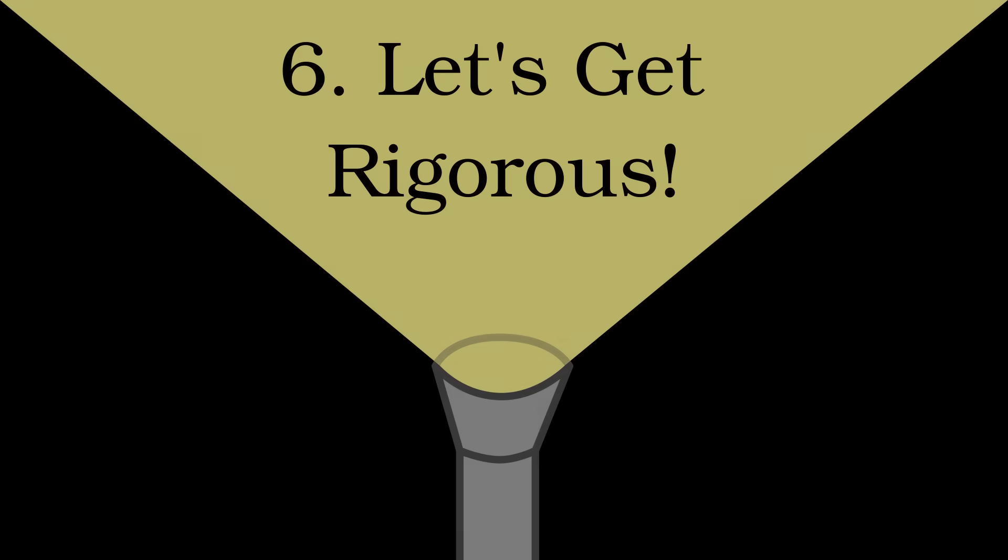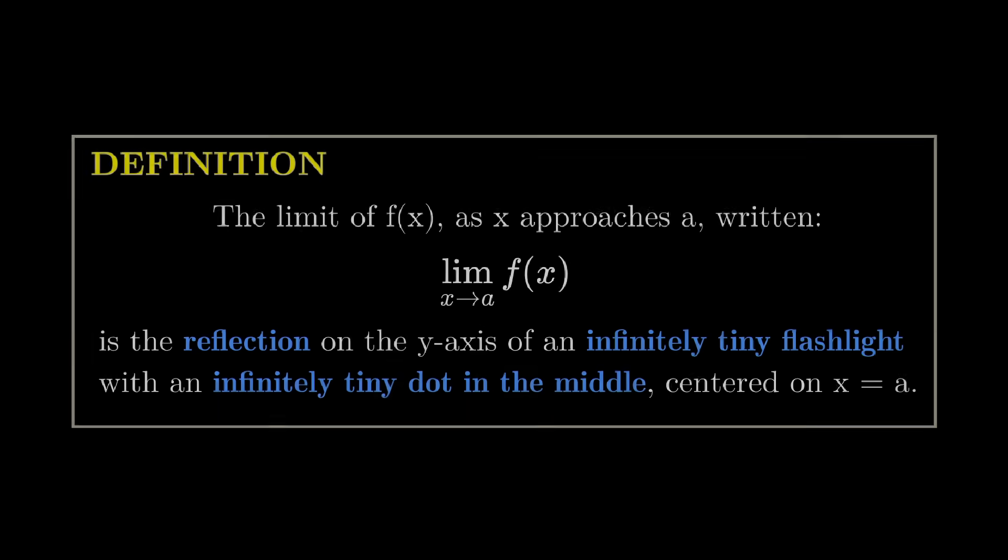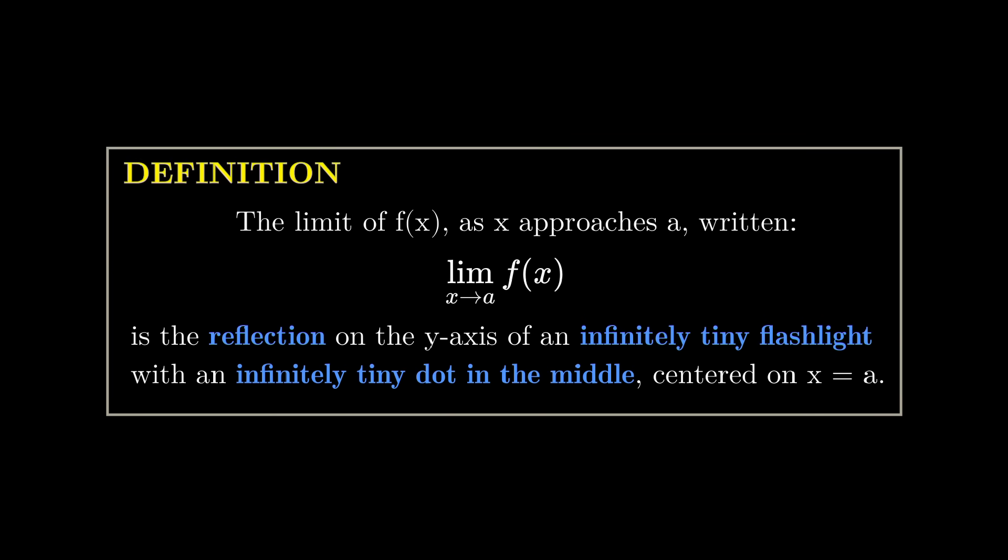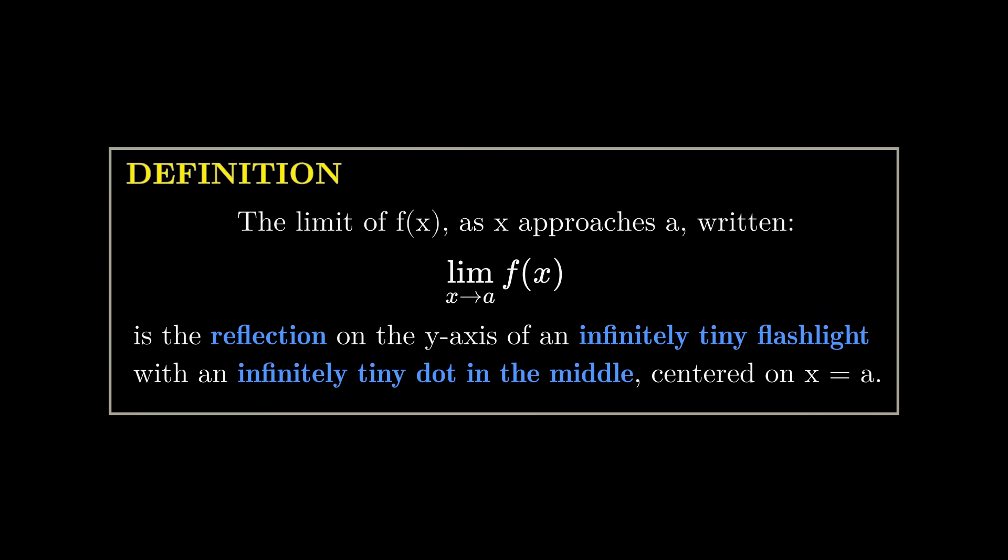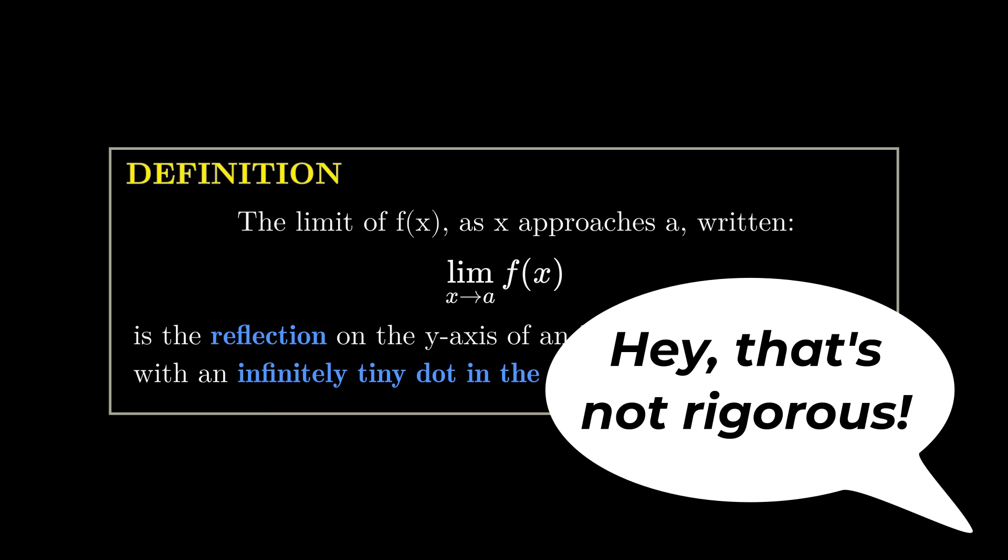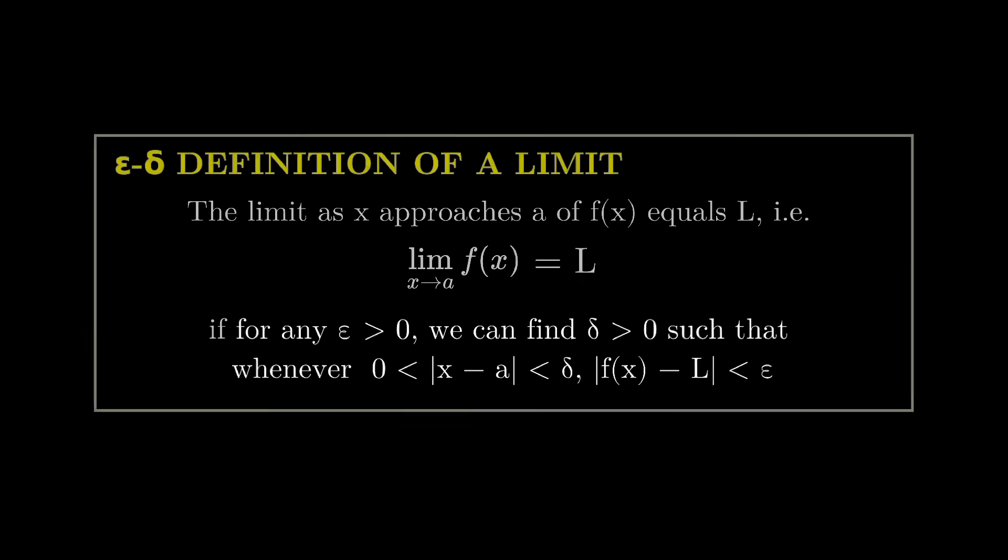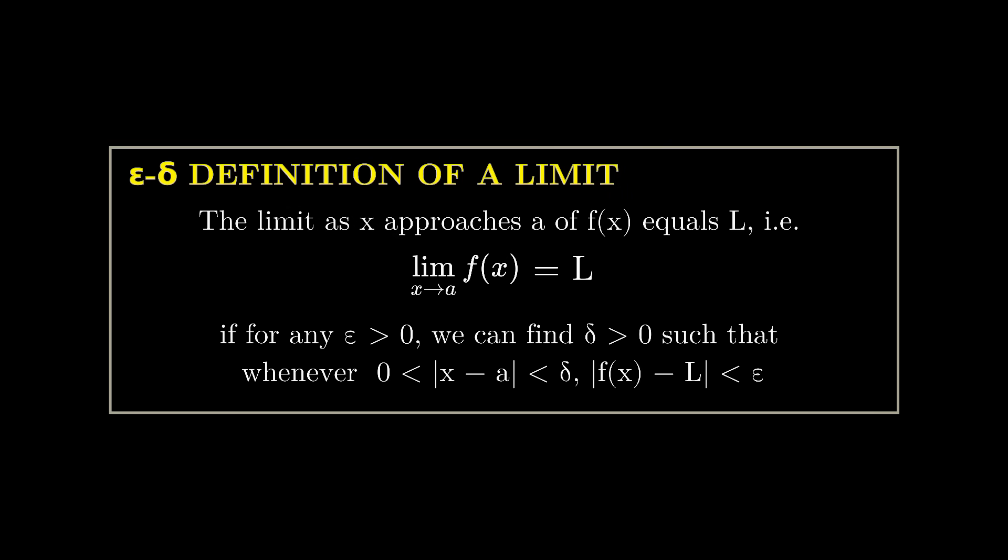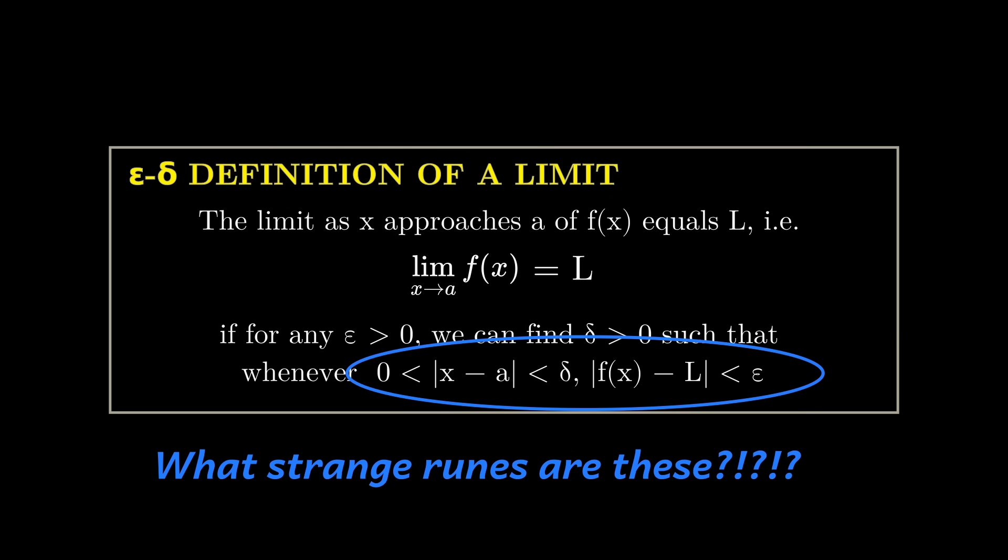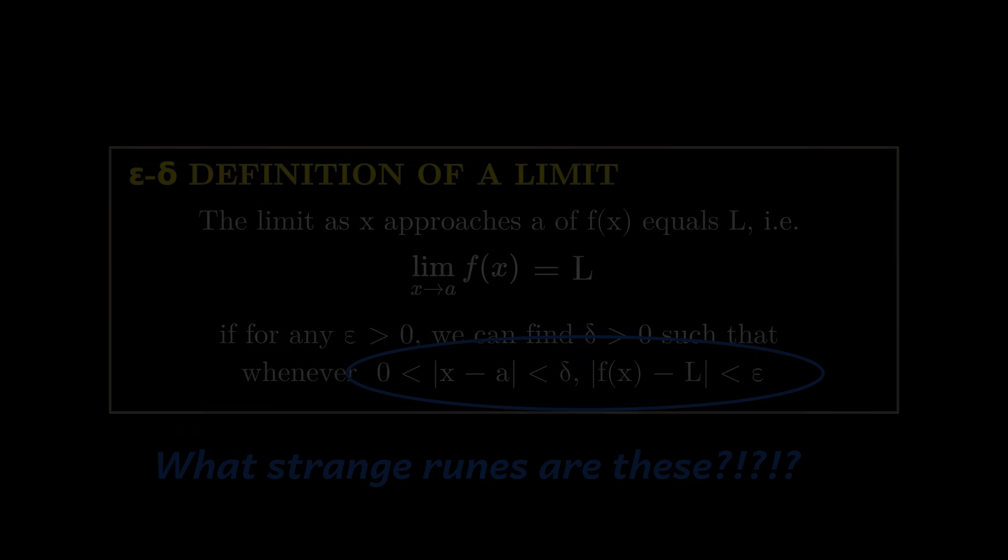Now so far, I've defined a limit as the reflection of an infinitely tiny flashlight with a little dot in the middle. But for whatever reason, most math textbooks find this definition a little unrigorous. Instead, you might have seen this definition, called the epsilon-delta definition of a limit. And if you're like me, the first time you saw this, you found it a little bit intimidating. But it's really not so bad if you think about it with flashlights and targets.